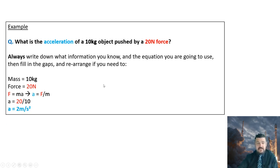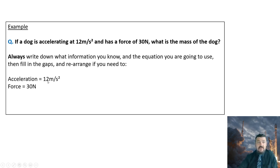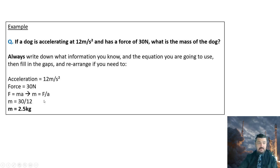Follow these steps — they may seem simple now but later in your academic career they will come in handy. One more: if a dog is accelerating at 12 metres per second squared and has a force of 30 Newtons, what is the mass of the dog? We write down the information: acceleration = 12 m/s², force = 30 Newtons. Base equation is force equals mass times acceleration. Rearranging to make mass the subject: mass equals force divided by acceleration. So mass equals 30 divided by 12, which gives us 2.5 kilograms.